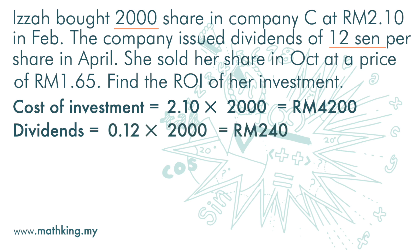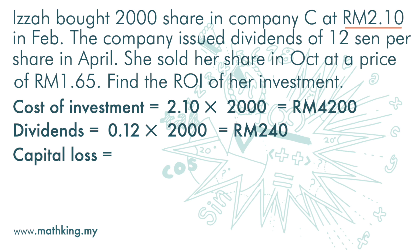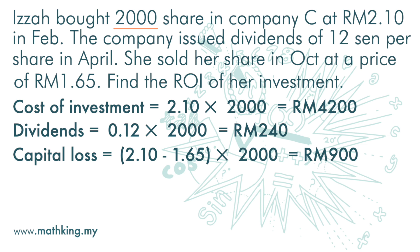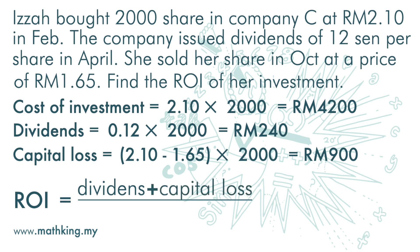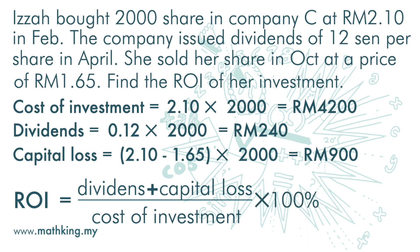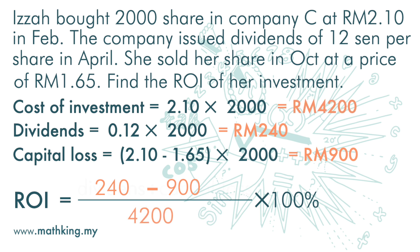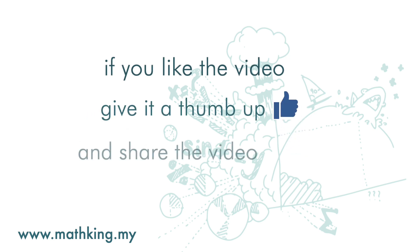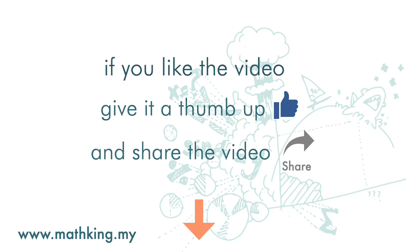The dividend she received was 12 cents times 2,000 shares, which is 240 ringgit. The capital loss is 2 ringgit 10 cents minus 1 ringgit 65 cents, times 2,000, which is 900 ringgit. So the ROI is dividend plus capital loss divided by cost of investment: 240 minus 900 divided by 4,200, and we get negative 15.7%.